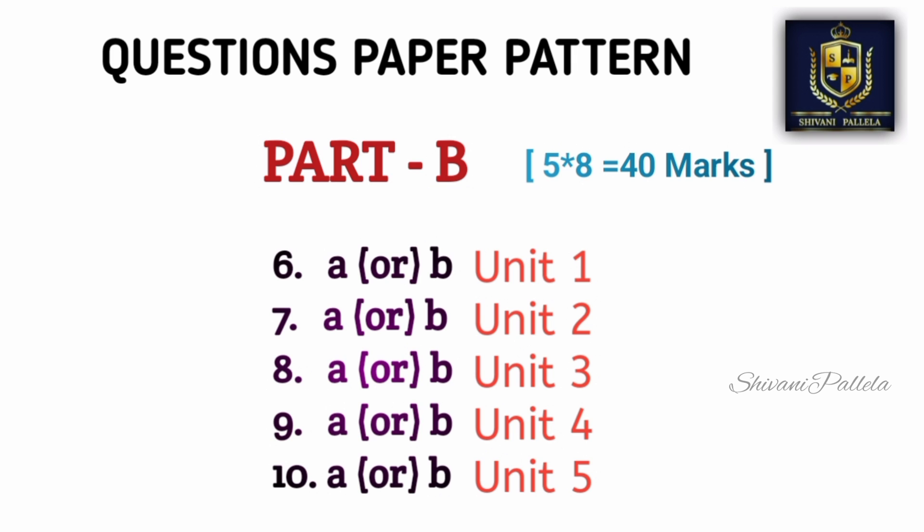Each Part B question will have an internal choice — it may be theory or problematic. Question 6A will be theory or problematic, and 6B will also be theory or problematic. You need to be perfect with both theory and problematic. Question 6 comes from Unit 1, Question 7 from Unit 2, Question 8 from Unit 3, Question 9 from Unit 4, and Question 10 from Unit 5.